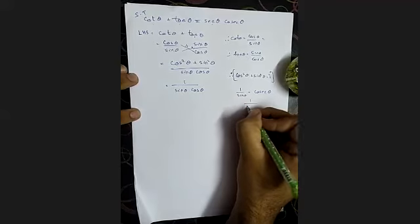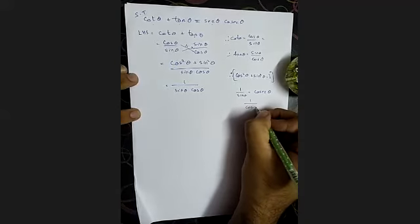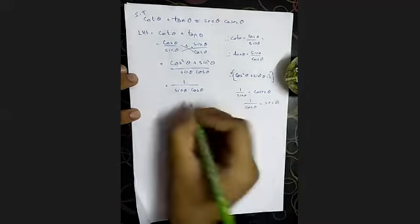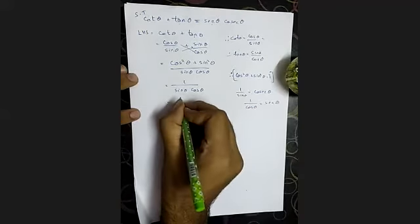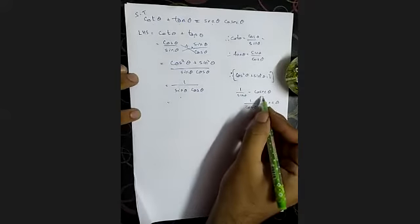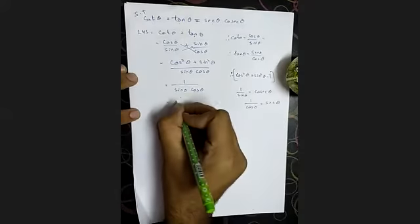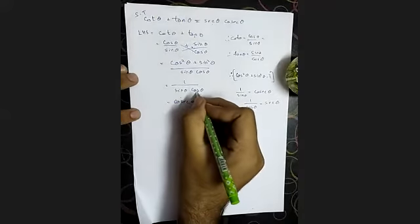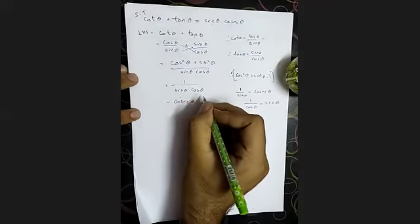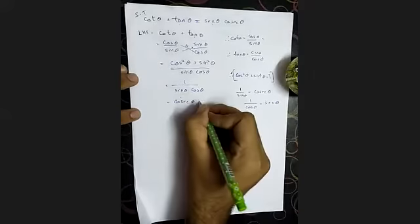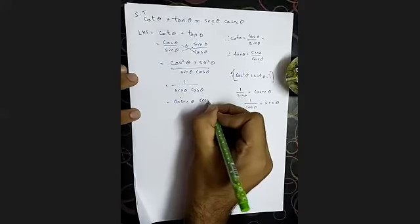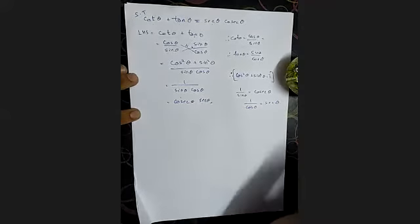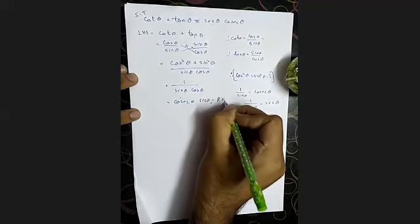Now, 1 by sin theta is equal to cosecant theta, and 1 by cos theta is equal to secant theta. So this can be written as cosecant theta into secant theta, which is equal to RHS.